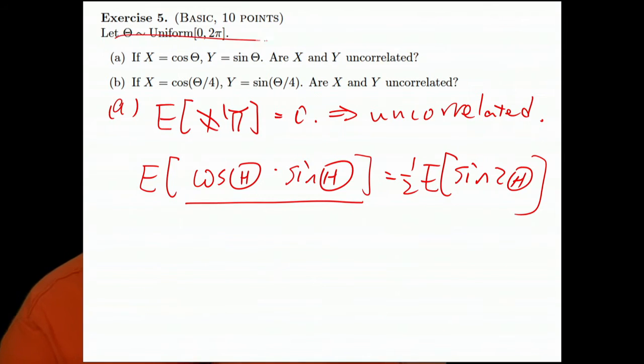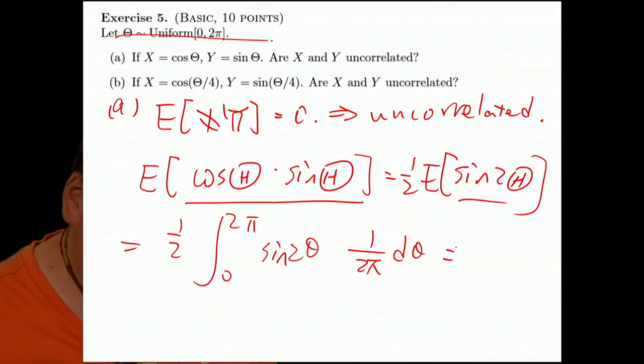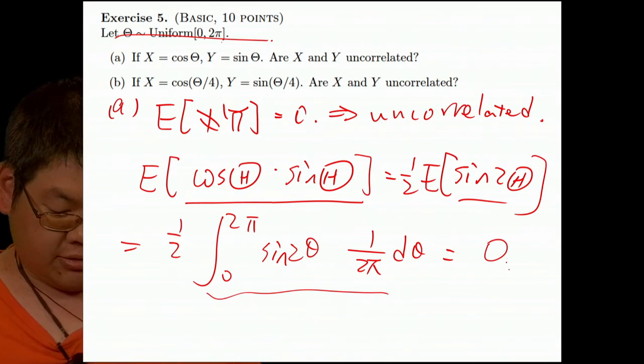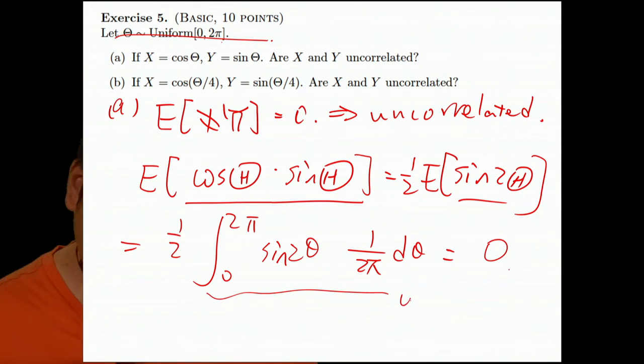And theta is uniform. So actually, it's uniform from 0 to 2 pi. So the weighting will be 1 over 2 pi. And all possible outcomes, sine 2 theta, d theta. And because it's from 0 to 2 pi, then this integration is 0. So uncorrelated.